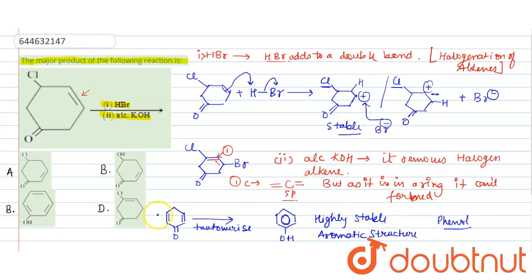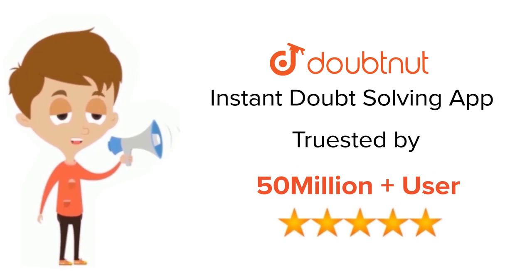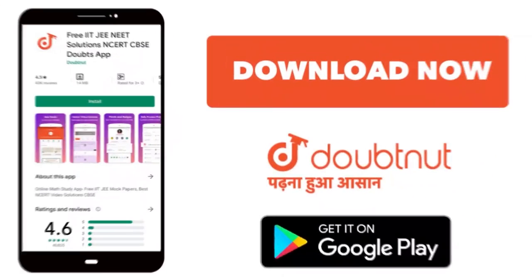So the answer is option B. Answer is B. Thank you. For class 6-12, IIT-JEE, and NEET level, trusted by more than 5 crore students. Download Doubtnet app today.